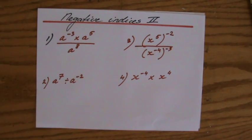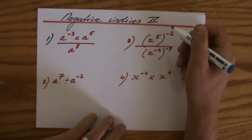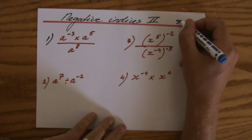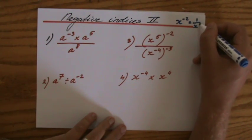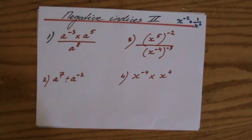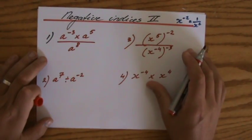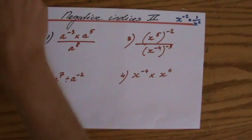We've seen in my previous video that a negative index, for instance x to the power minus 2, is the same as 1 over x to the power positive 2. I've shown you why, so make sure you've seen that video.